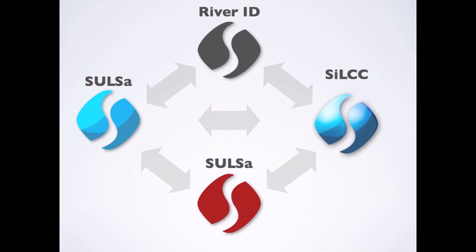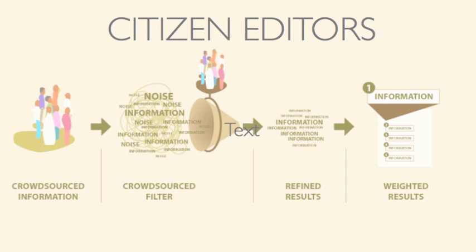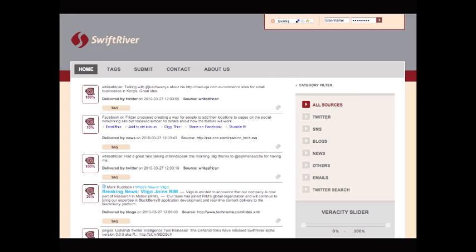Using a number of core technologies, Swift can do this. Swift River is the filter. By scoring and rating the accuracy of incoming content, users can refine how they view results. Let's take a look.